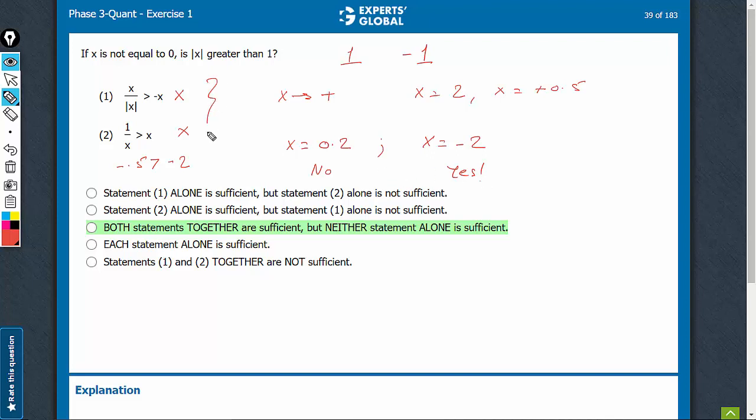Now let's combine and check. On combining, we know from statement 1 that the only condition is that x should be positive. And from statement 2, we know that x can be a small positive number less than 1, or x can be a large negative number smaller than minus 1. Combining the two conditions, this case can be eliminated. And therefore,